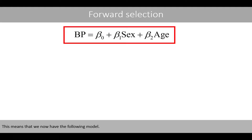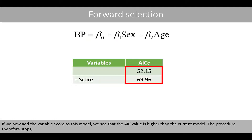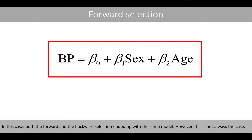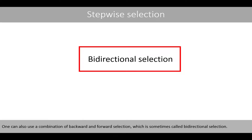This means that we now have the following model. If we now add the variable score to this model, we see that the ISE value is higher than the current model. The procedure therefore stops and reports the following model as the best model. In this case, both the forward and the backward selection ended up with the same model. However, this is not always the case. One can also use a combination of backward and forward selection, which is sometimes called bidirectional selection.